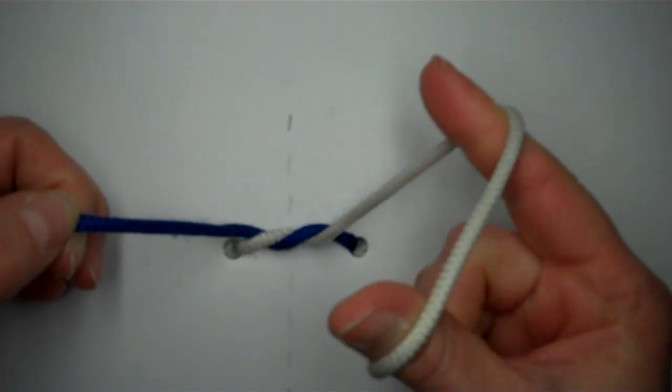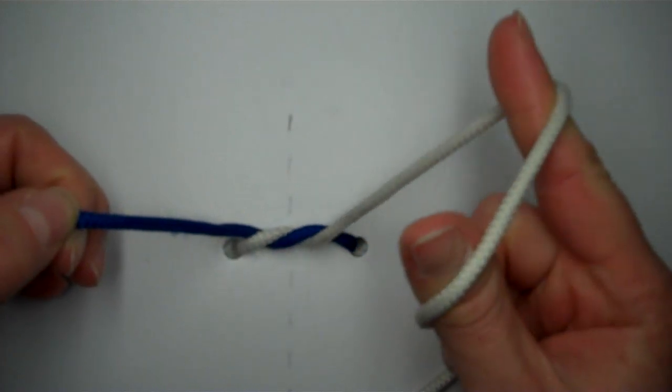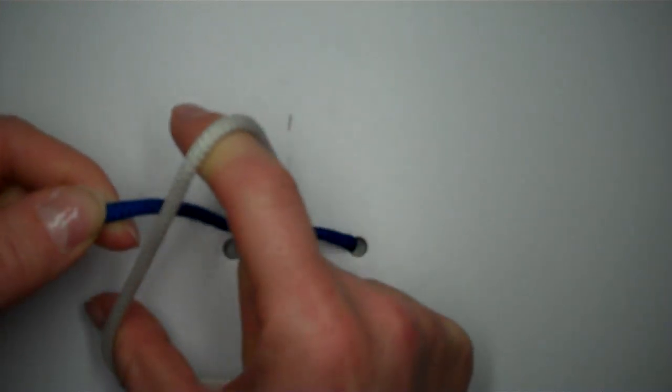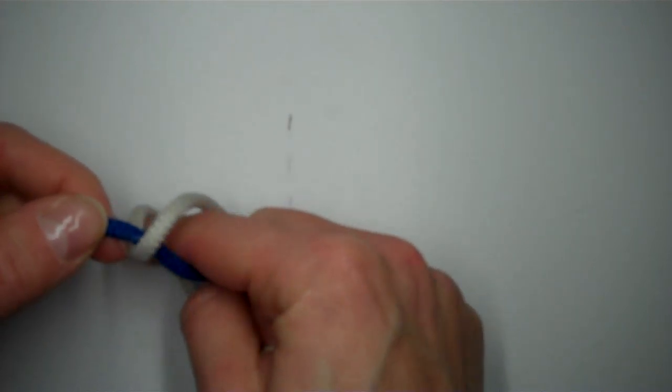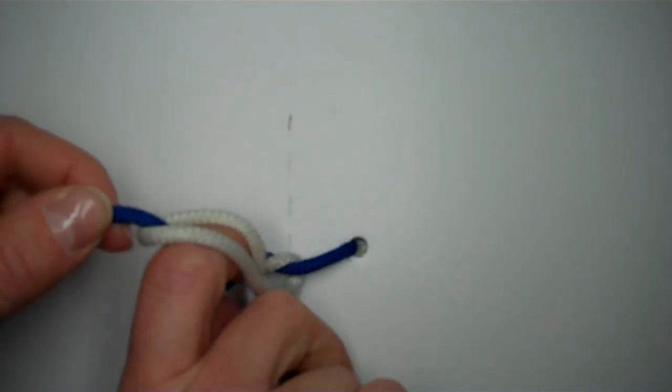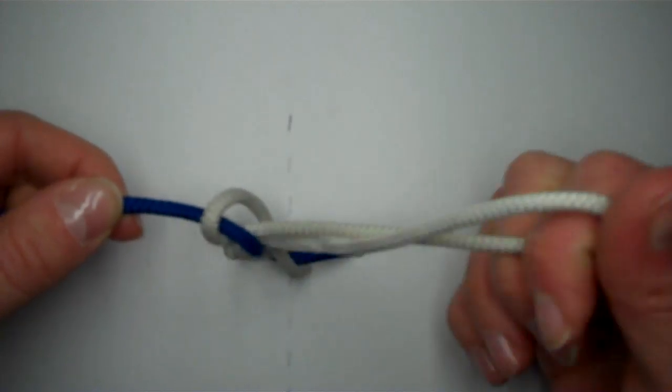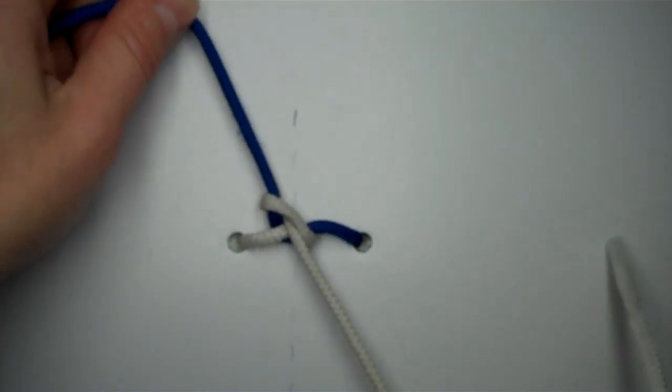Now what you're going to do is loop the string around your finger and your thumb. Make an X along the other one. And you're going to use your index finger to pull that string through. It kind of becomes a sneaky finger.